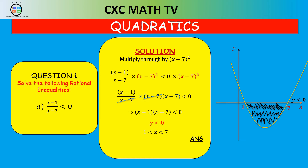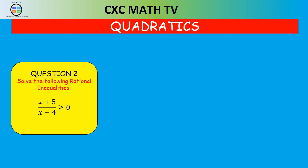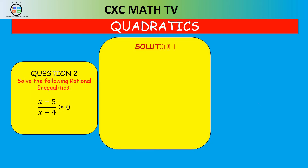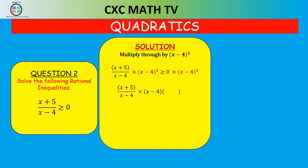Pause the video and try question two: X plus five divided by X minus four, greater than or equal to zero. We multiply through by X minus four all squared. The X minus four cancels with one from the denominator, and zero times anything is zero, leaving X plus five times X minus four greater than or equal to zero.